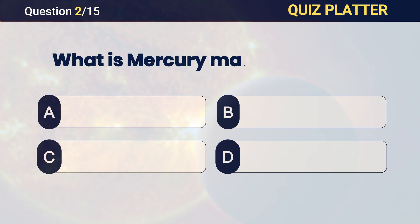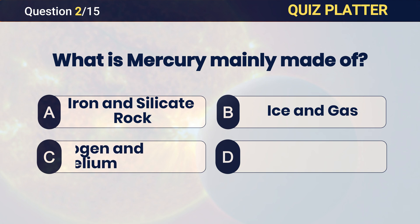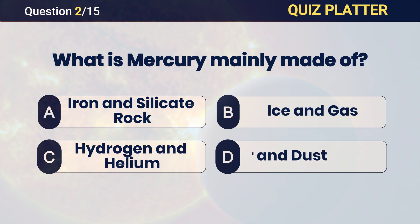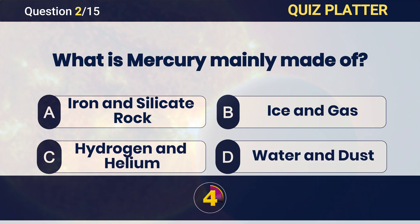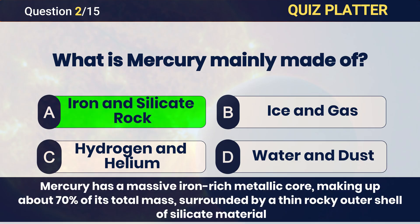What is Mercury mainly made of? Answer: A — iron and silicate rock.